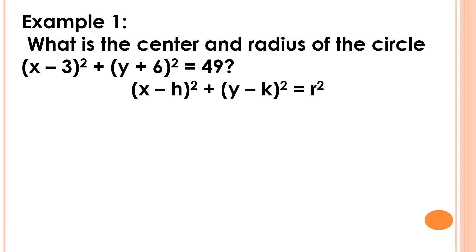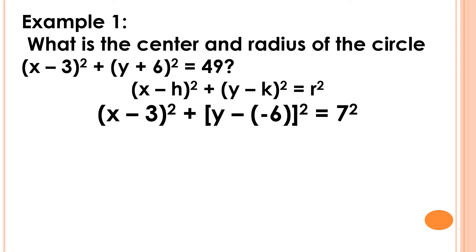For example number 1, what is the center and radius of the circle? The quantity of x minus 3 squared plus the quantity of y plus 6 squared is equal to 49. First step, we're going to write the given equation in the form of x minus h squared plus the quantity of y minus k squared is equal to r squared. And the equation will be the quantity of x minus 3 squared plus the quantity of y minus negative 6 squared is equal to 7 squared.